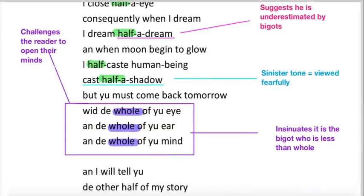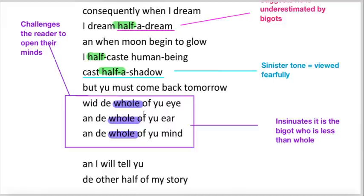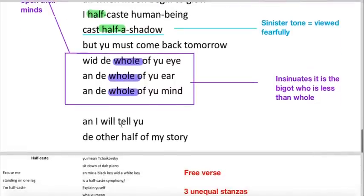But you must come back tomorrow with the whole of your eye and the whole of your ear and the whole of your mind. So what he's really doing now is challenging the reader to open their minds. And he insinuates that actually it isn't he who is mixed race that is less than a person. It is the bigot who is less than whole. It's the bigot who is using half his brain to think. It's quite interesting that he turns the tables to say, actually, I'm more of a person, I am more human than you are, if you think in this way. And I will tell you the other half of my story. So it's quite sarcastic as well.